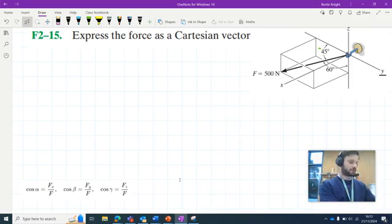We have this problem from chapter 2 of the textbook. It's very similar to problems F2-13 and F2-14, asking us to express the force as a Cartesian vector with a diagram of a 500 newton force acting in 3D space.